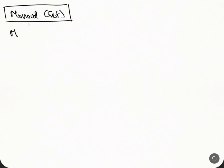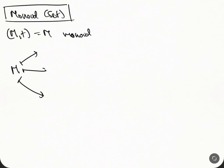Let M be an additive monoid. To this monoid there are a number of things I can do. There are kind of three operations I want to describe — ones we all know really well.